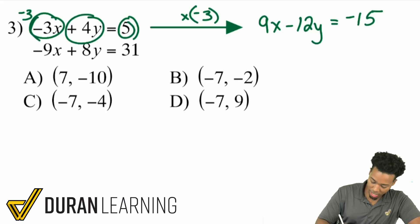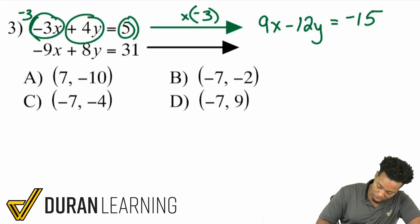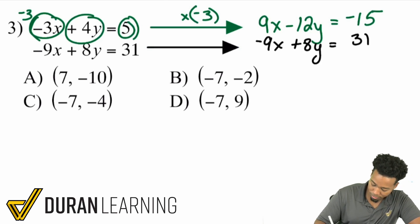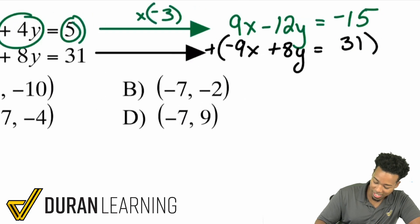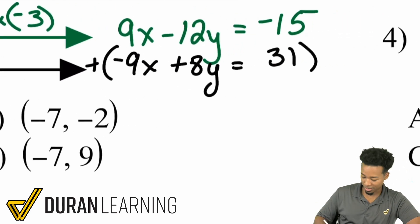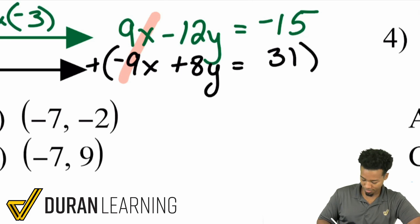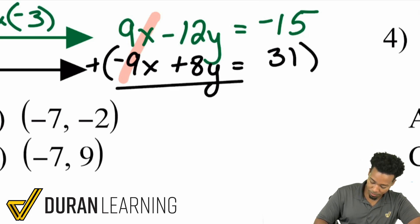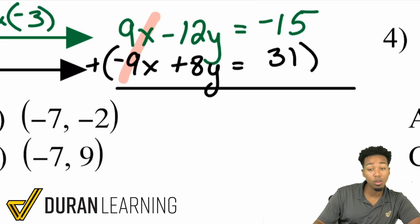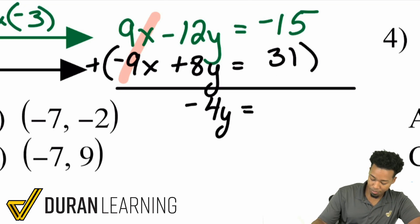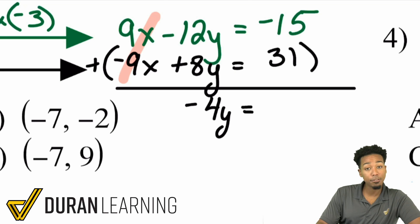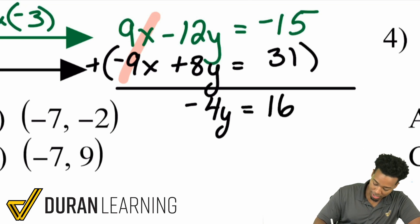Let's get back to the problem. Write that first equation as it was, and so we're going to have negative 9x plus 8y equals 31. Let's add these two equations together and look at the magic happen. We see that the 9x and negative 9x cancel, right there, nice and easy. Then we have ourselves negative 12y plus 8y, that's going to be negative 4y, and then from there, we have negative 15 plus 31, that's going to give us a positive 16.